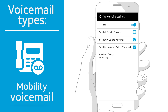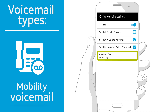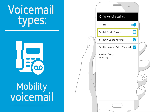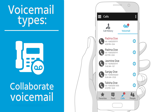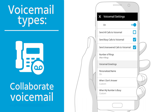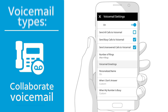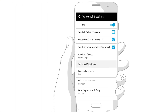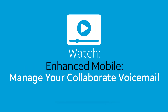You can choose when calls will go to voicemail — for example, when your number is busy or when you don't answer. You can select the number of rings before the call goes to voicemail, or you can send all calls to voicemail. If you have Collaborate voicemail, you'll use the Collaborate app to see and manage your voicemail messages and change your voicemail settings. To learn how, watch Enhanced Mobile: Manage Your Collaborate Voicemail.